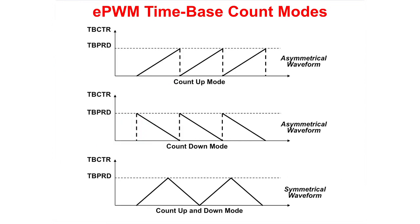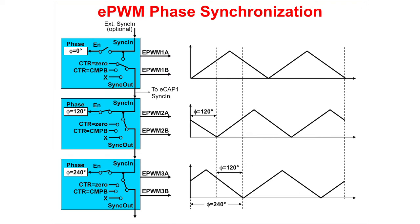The upper two figures show the time-based counter in count up mode and count down mode, which are used to generate asymmetrical waveforms. The lower figure shows the time-based counter in count up and down mode, used to generate symmetrical waveforms. If needed, an ePWM module can be synchronized with adjacent ePWM modules. Synchronization is based on a sync-in signal, time-based counter equals zero, or time-based counter equals compare B register. Additionally, the waveform can be phase shifted.